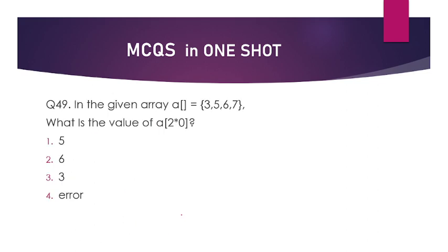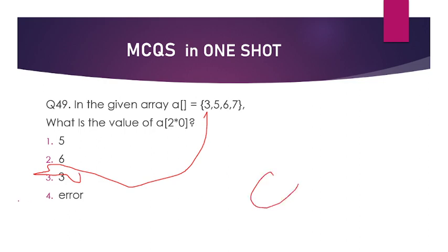In the given array a = {3, 5, 6, 7}, what is the value of a[2 * 0]? That means 2 × 0 = 0. So a[0] = 3. The answer is option number C — that is 3.